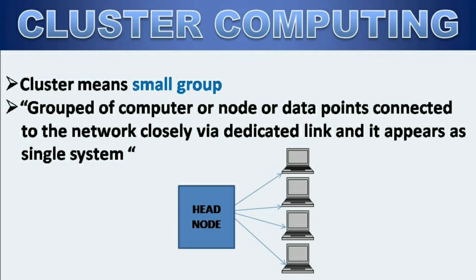First you have to know what a cluster means. A cluster is basically a small group of computers, nodes, or data points connected to a network closely via a dedicated link, and it appears as a single system. Here you can find the head node, through which four computers are connected. Each computer can be called a computer node or data point — these are essentially the same thing.